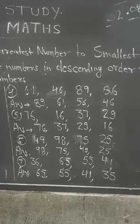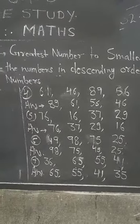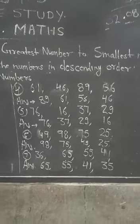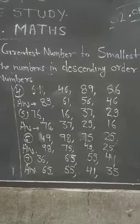56, and last 46. Question number 5 में है: 76, 16, 37, 29. सबसे बड़ा number 76, 37, 29, and 16.